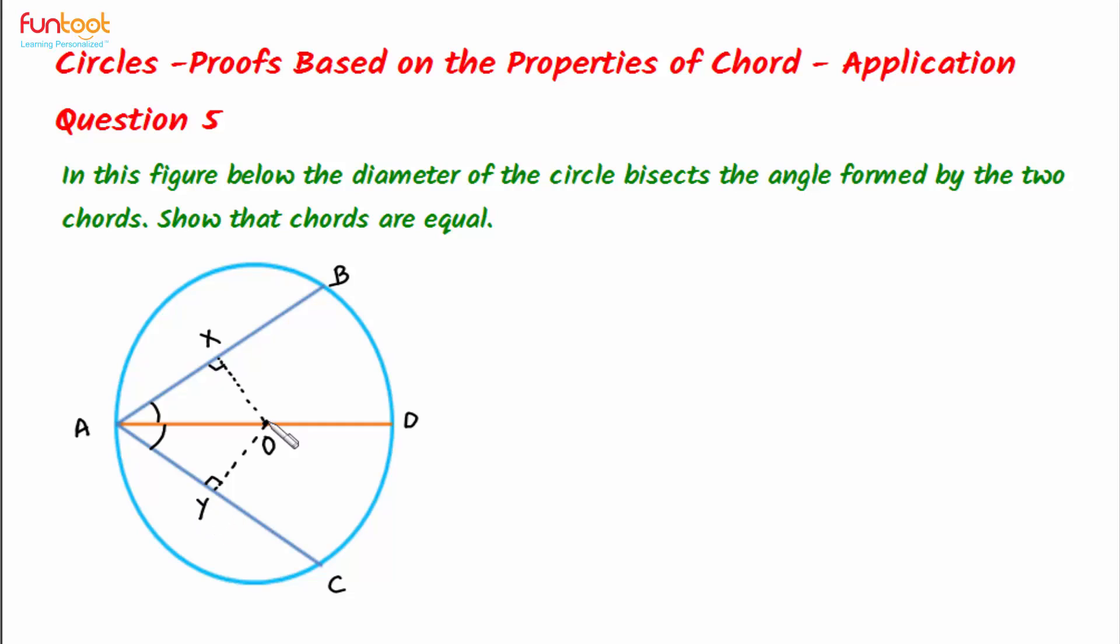If we can show that OX is equal to OY, then we can say that chords AB and AC of the circle are equal in length. For this, we can take help of congruence in triangles AXO and AYO. With this approach, let's complete the proof.